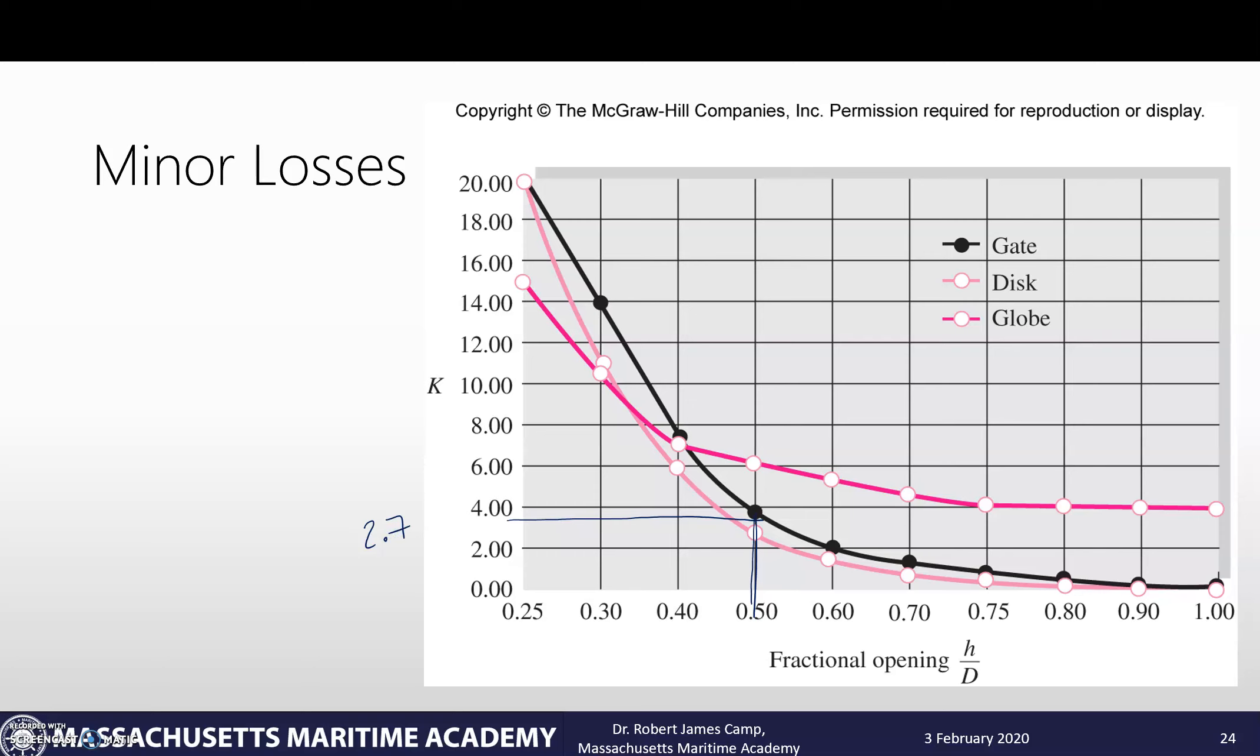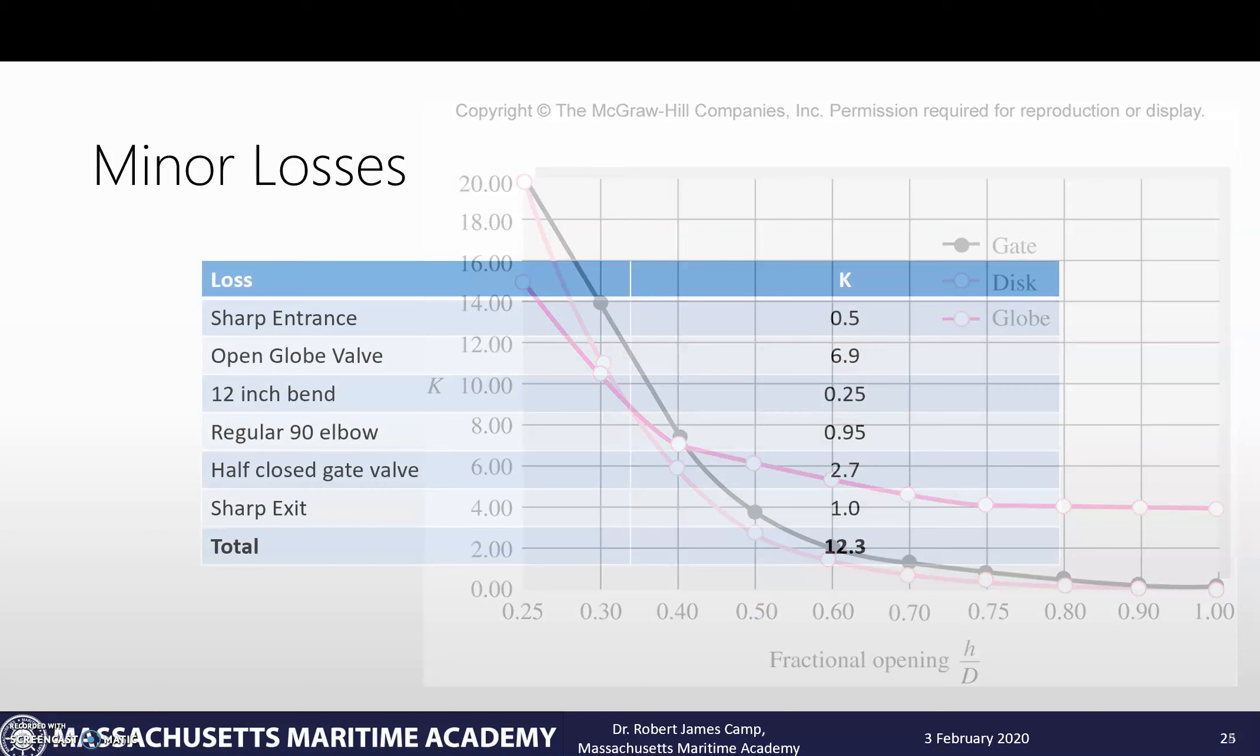We use 2.7 in the problem. From the chart itself, for me it looks more like 3.5. If we use the 3.5 versus the 2.7, is it going to cause a huge difference? No. Once again, we're reading off of the chart, so we are going to have a little bit of that variability there.